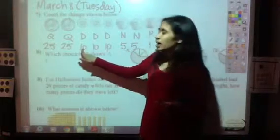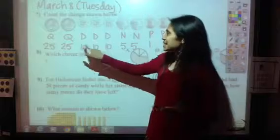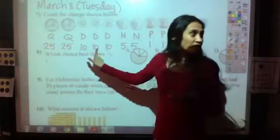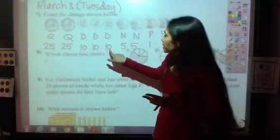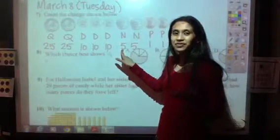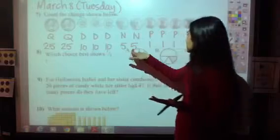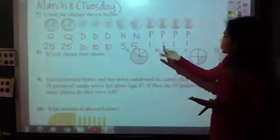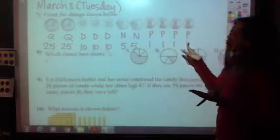50. And then 10 is 60, 70, 80, 85. And then five more is 90, 91, 92, 93, 94.